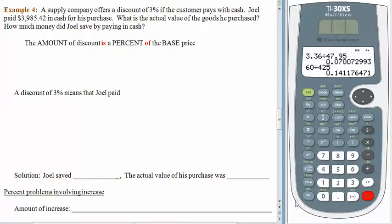A supply company offers a discount of 3% if the customer pays with cash. Joel paid $3,985.42 in cash for his purchase. I bet he felt really nervous carrying that kind of money around. Anyway, what is the actual value of the goods he purchased and how much money did he save by paying in cash? Let's see what we have. The amount of the discount is not given. We know how much he paid, but that's not how much he saved. We have a percentage. So I don't know what that is. We have a percentage. We can turn that into a decimal without a problem. The base price, that's the original one, the price before the discount. And we don't have that either. And that's a problem. It's pretty hard to solve an equation when you're missing two pieces of the puzzle.